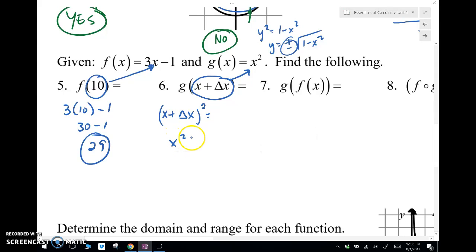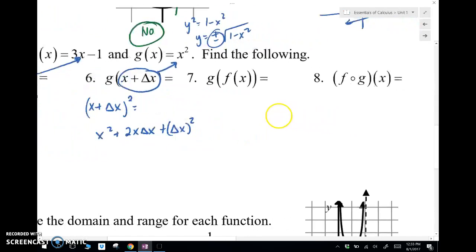So I actually don't suggest you simplify. But if you did, it would look like this: x squared plus 2x delta x plus delta x squared. And just in case you wanted to simplify it, you don't have to in this case, because I didn't ask you to.